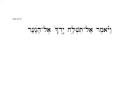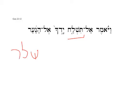Genesis 22, verse 12: vayomer, al tishlach, yadachah el hana'ar — 'And he said, do not stretch out your hand against the boy.' Here the negative is the softer jussive negative. The verb tishlach comes from shin-lamed-chet, 'to stretch out,' and the third root letter is a strong guttural. This is a qal imperfect, 2ms. What we can see is the theme vowel at the end of the word is not a holom, but is converted to a patach under the strong influence and demands of chet as the final root letter.